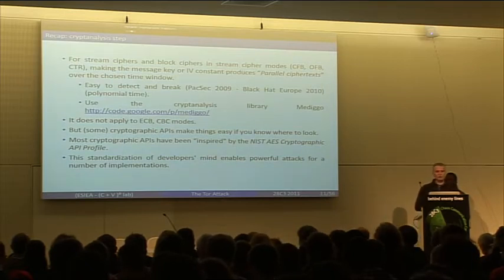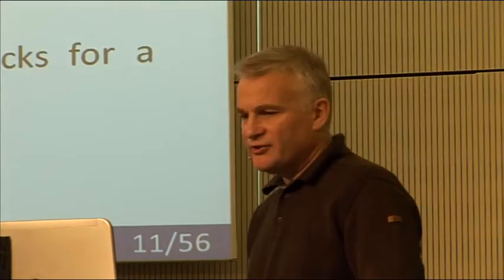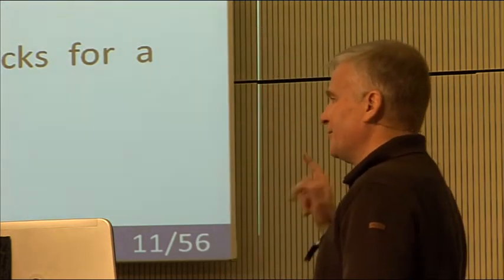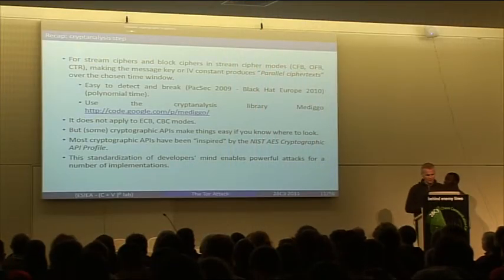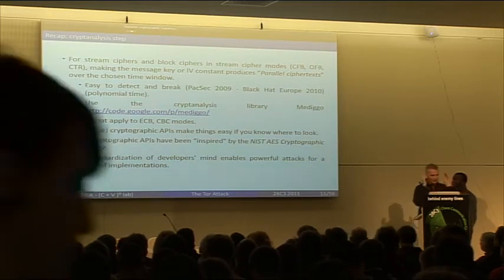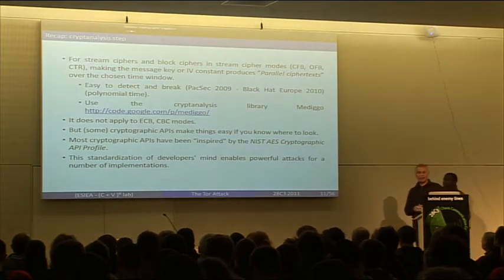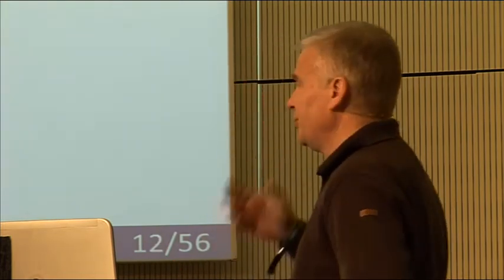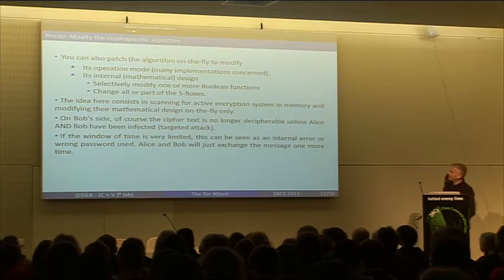And you will be surprised how much encrypted traffic can be partly broken by applying these techniques. Of course, we are considering stream cipher modes. So how to do that when you have, for example, ECB or CBC mode? Well, that's where there is a very interesting point, because since the contest of the NIST — National Institute of Standard Technology — to promote the AES, they impose some sort of standardisation of mind to develop cryptographic libraries. As a consequence, many developers are writing their libraries in the same way most of the time. So there is some sort of standardisation of mind. So if you exploit this, you can do many things. You can change many things in memory with malware in order to weaken the cryptography.